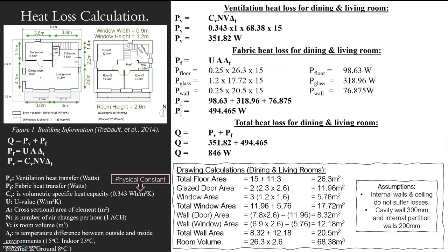When we get to ventilation, we need to know the heat capacity of air, because if you're transferring air in and out of a room, you need to know how much heat is transferring in that air. That value is a physical constant — standard air is 0.343. I've written that there.